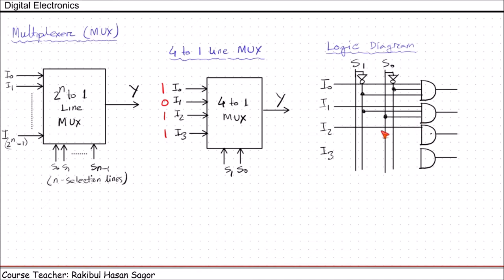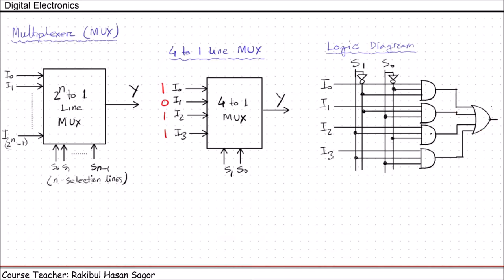For I2, the selection input should have 10, so we need to take S1 and S0 prime as inputs. And for I3, the selection input should have the value 11, so we can take S1 and S0 directly. Since there is a single output, all these AND gate outputs must pass through an OR gate. This is the function output Y — this is the internal diagram of a 4-to-1 MUX.